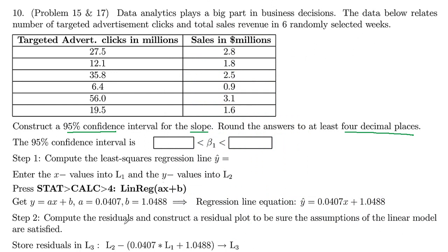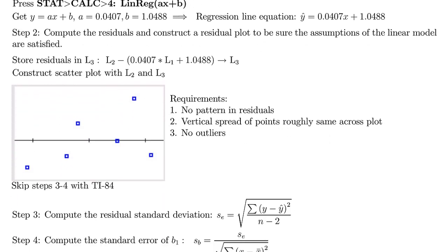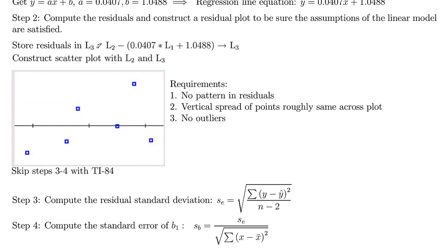Next, we are going to compute the residuals and then construct a residual plot to make sure the assumptions apply here. So we're going to make a third list from the first and second list. We're going to take the difference between list two, which is our y values, and then the values from list one plugged into the regression equation, the 0.0407x plus 1.0488. So this is actually the y hat value. And then the residual is the difference between the actual y value and the predicted y value, which is y hat.